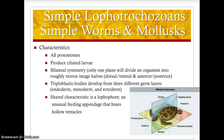Lophotrochozoans are the simple worms and mollusks. When we look at their characteristics, they all have that protostome line of development, where the mouth is first and then the anus comes second. All of them have the modal ciliated larval stage, so at that stage of their life they are modal, and they are also modal in their adult life as well.